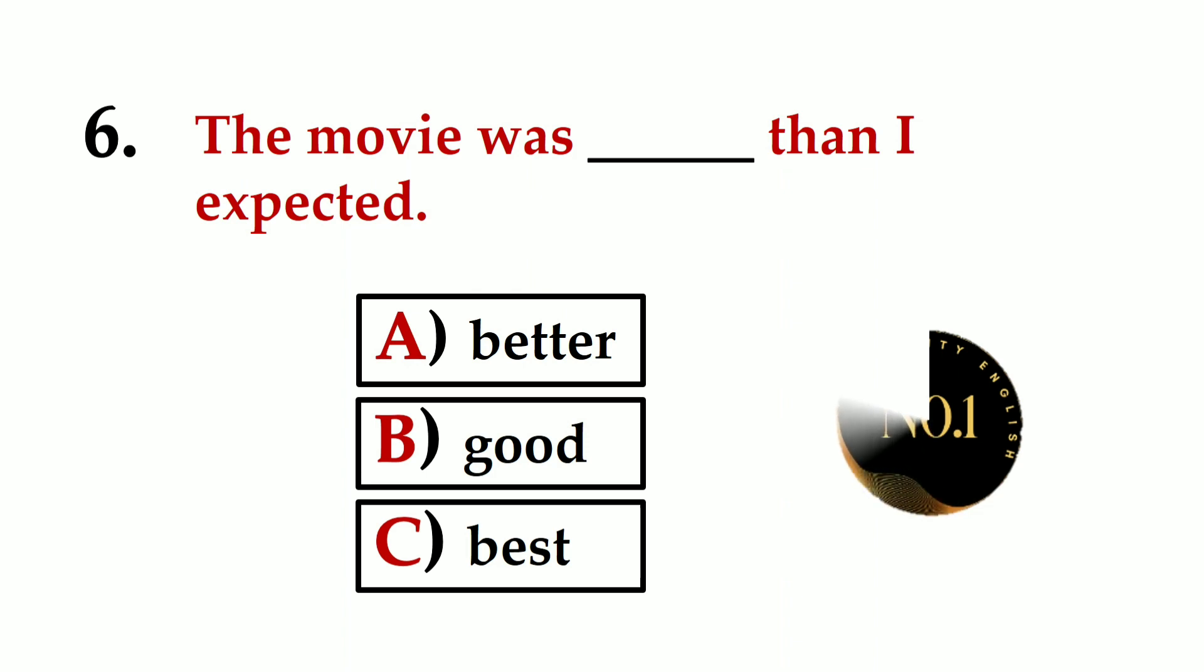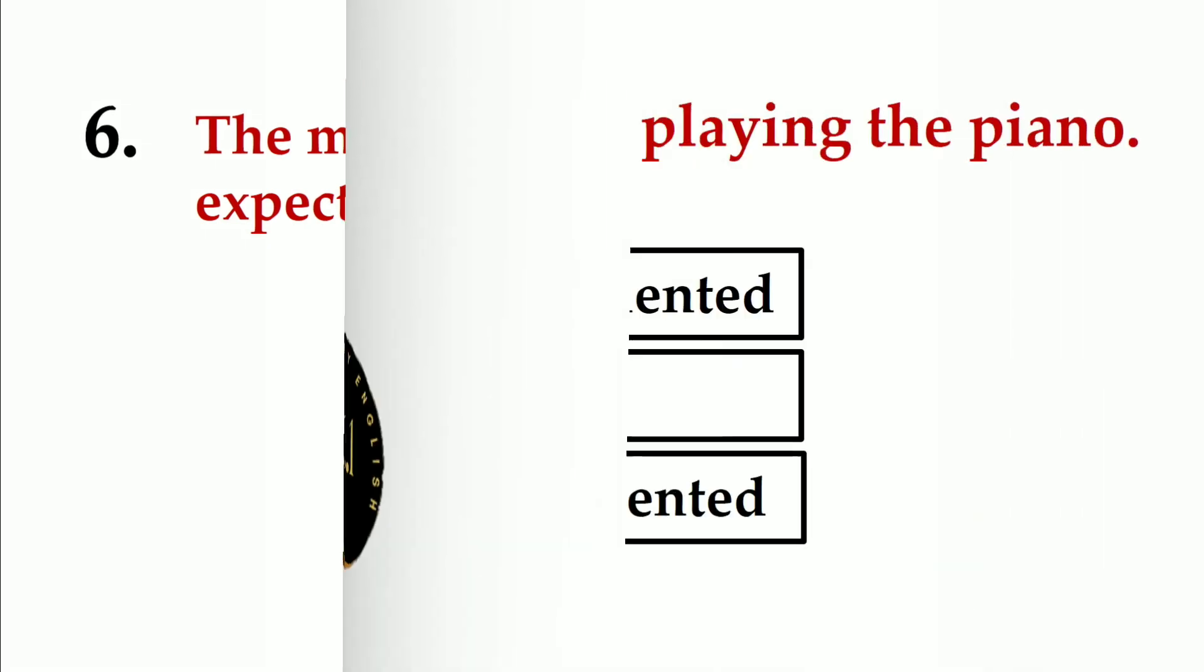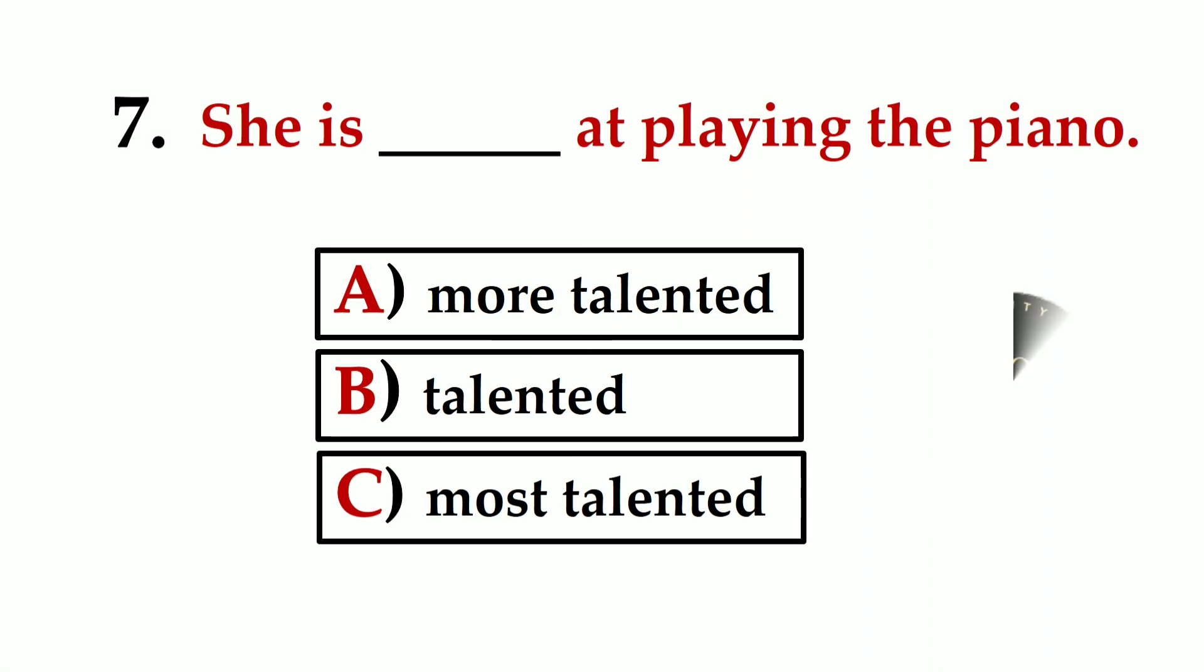Number six: The movie was ___ than I expected. A) bitter, B) good, C) best. The correct option is better than expected.